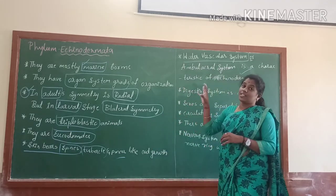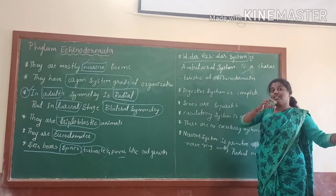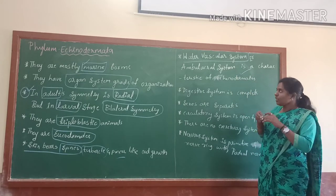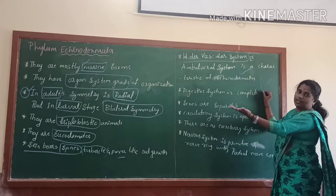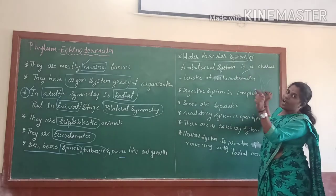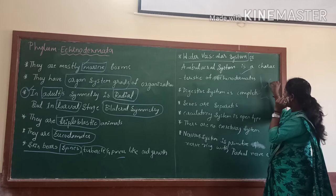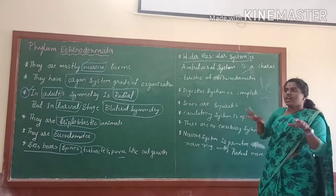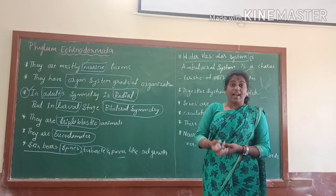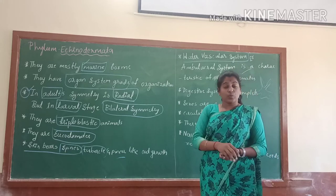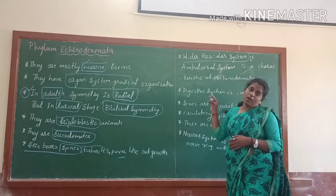They consist of a water vascular system with vessels. For example, this diagram shows the starfish, and they have two black vessels which are helpful for excretory purposes and digestive purposes. Even for migration they are helpful for that.